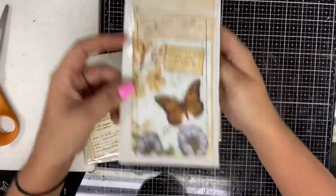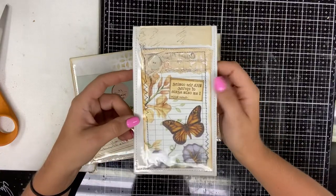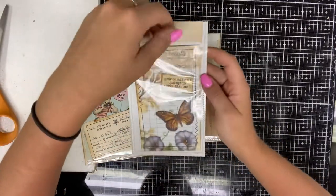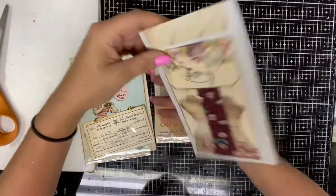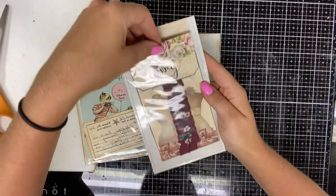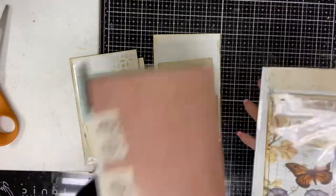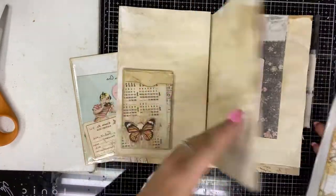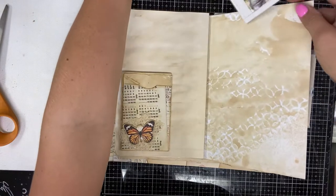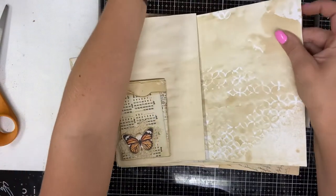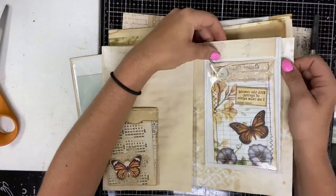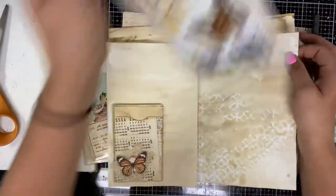First, this is something that goes over your page in your junk journal and you can clip it on and it's a pocket in the front as well as a pocket in the back. Let me show you real quick what I mean. It just opens up and it hangs over your page and you can clip it into your journal.